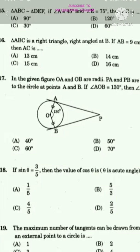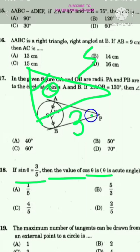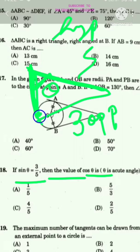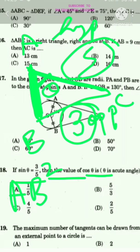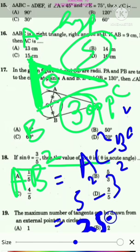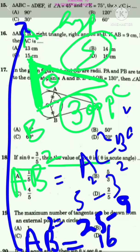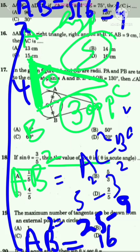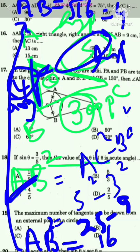The eighteenth question: if sin θ = 3/5, find cos θ. Using Pythagoras theorem, the adjacent side AB = √(5² - 3²) = √(25 - 9) = √16 = 4. So cos θ = adjacent/hypotenuse = 4/5. The answer is option C.